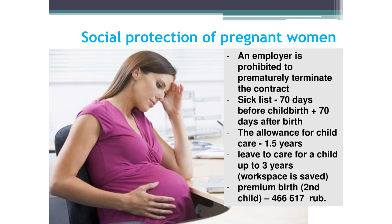In order to increase the birth rate, the government provides social protection for pregnant women. If a woman is pregnant, it is forbidden to prematurely terminate an employment contract with her. A pregnant woman receives sick leave 70 days before the expected birth and receives her average salary for 140 days while at home; this period may be extended for medical reasons. A woman can take leave to care for a child for a year and a half and receive a child care allowance from the state, or be on parental leave for up to three years — though without allowance, her job is saved and she returns to her own workplace. In Russia, a woman who gives birth to a second child receives a bonus of about half a million rubles from the state, which can be used to improve the quality of life for the child or for his education.